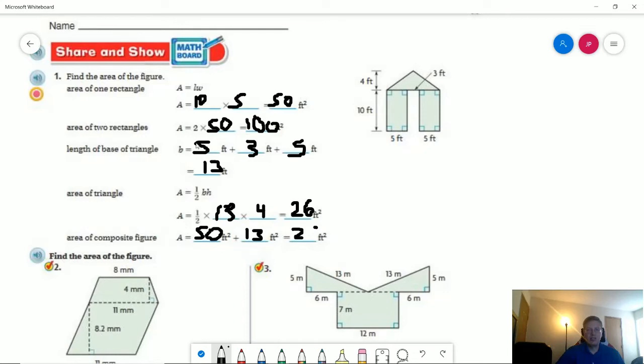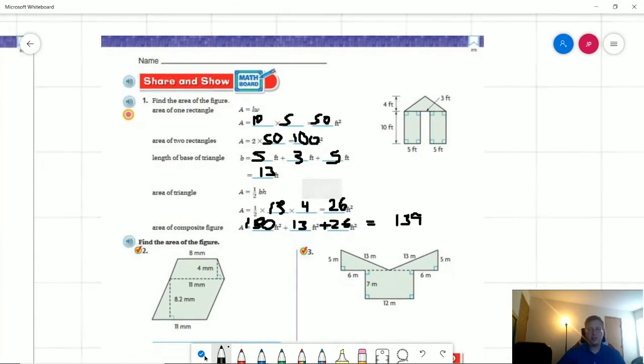I did that slightly differently than I probably should have. Let's do that. So I'm going to change it a little bit. Oh, sorry. That's what I did. This should have been 100. So 100 plus 13 plus 26 should give us 139 square feet for that.